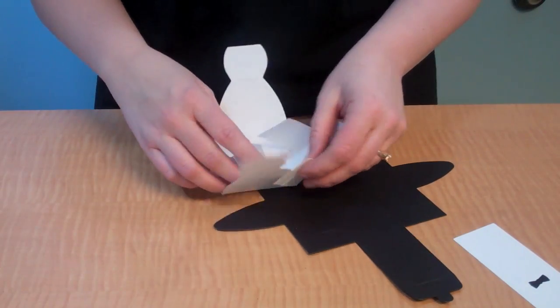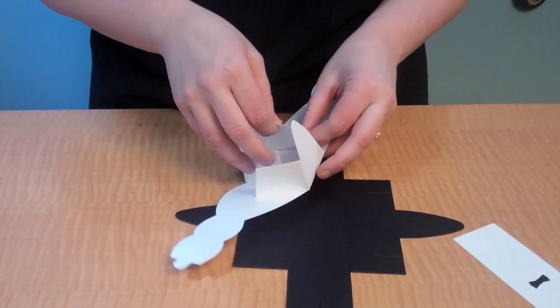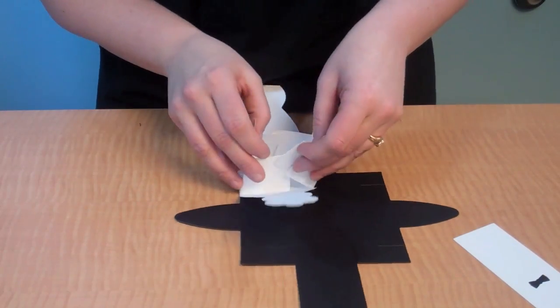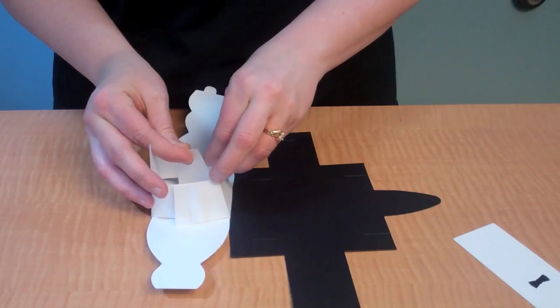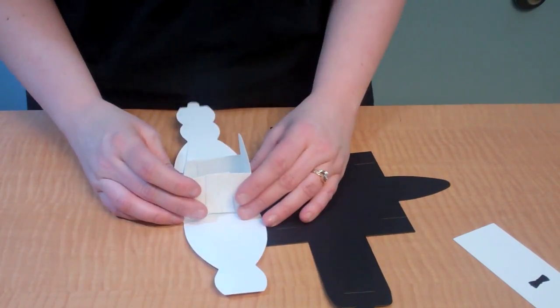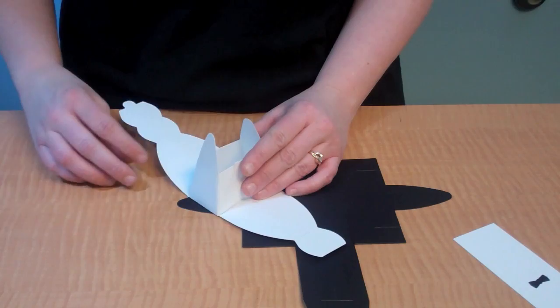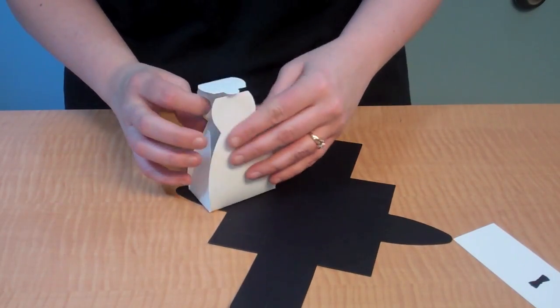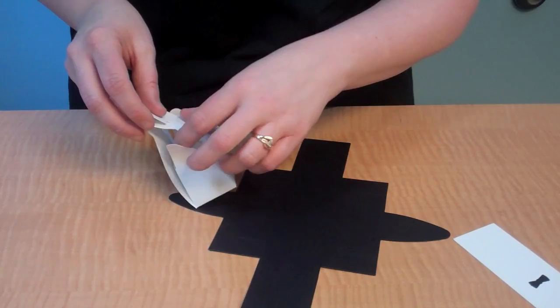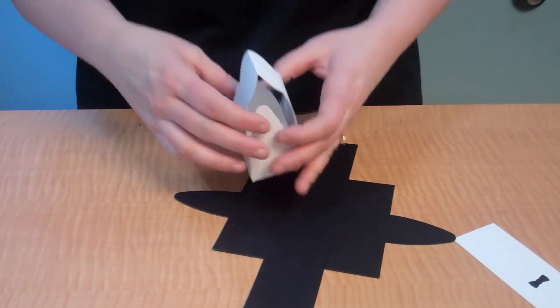Once you have those, you can see those little slits right there. Those just connect. At this point in time, this is when you would put your candy or whatever you have to put inside your box. Then you would bring this end up right here. There's a tiny little slit right there that you place that little nubby in there.